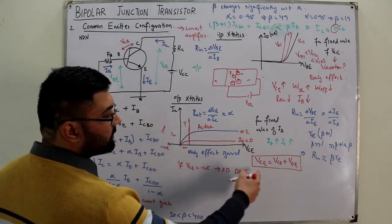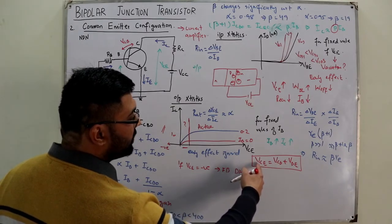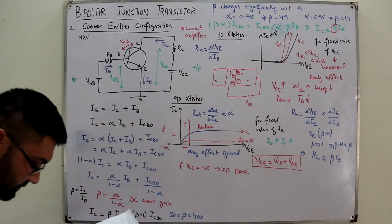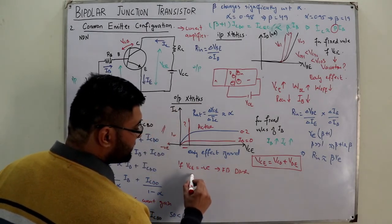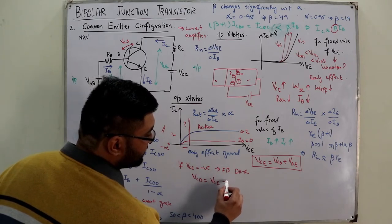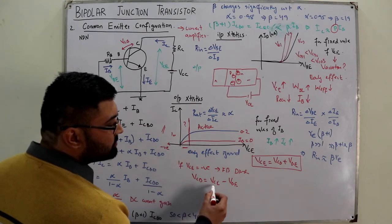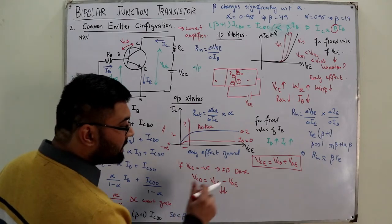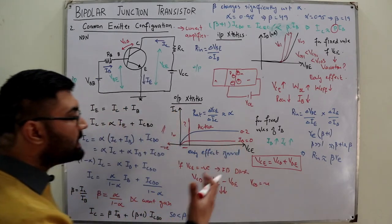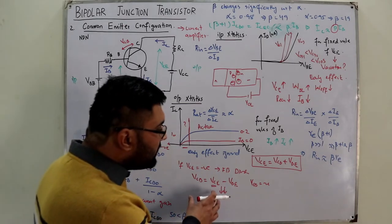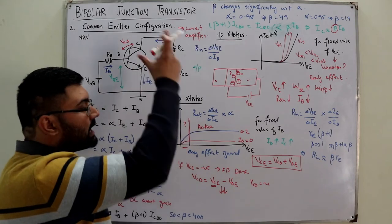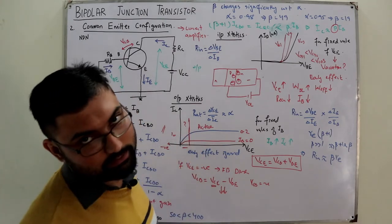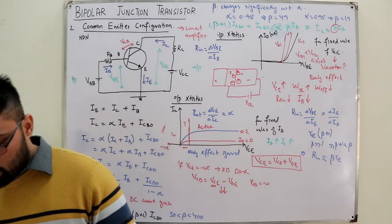In the region where VCE is very small: VCB = VCE − VBE. If VCE is very small, VCB becomes negative, meaning the collector-base junction has not yet been fully reverse biased. It is not yet able to completely reverse bias the diode, which is why we see reduced current in that region.